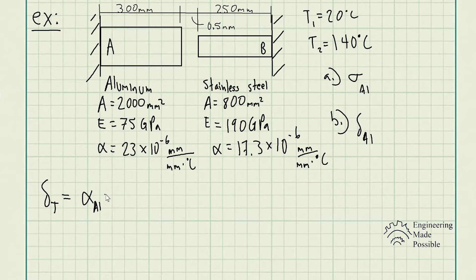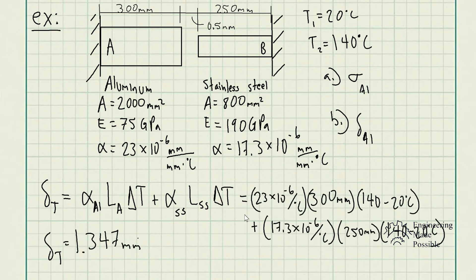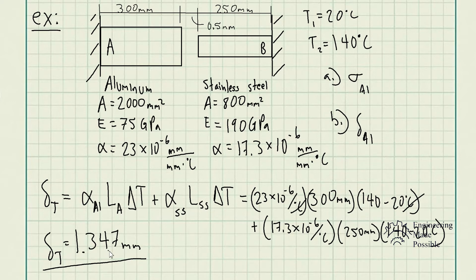First, let's use the equation for deformation due to thermal expansion. We're going to consider both expansions and compare to the gap to see if they will make contact and produce a reaction force. The thermal expansion of the aluminum rod is the coefficient times the original length times the temperature difference, plus the coefficient of thermal expansion for the stainless steel times its length times the temperature difference. Plugging in and solving, we get a total deformation of 1.347 millimeters. The temperature difference is always T2 minus T1.